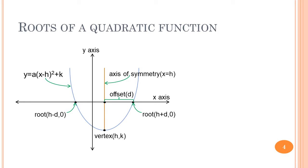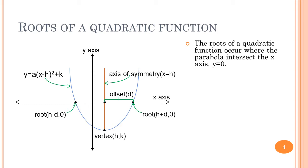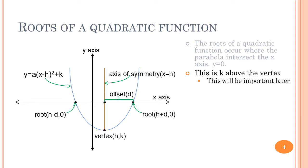We have a graph of a quadratic function with the roots indicated. The roots are on the x-axis where the parabola intersects it — that is, where y equals zero. Notice that this is also k units above the vertex, and this will be important later on, so keep that in the back of your mind.